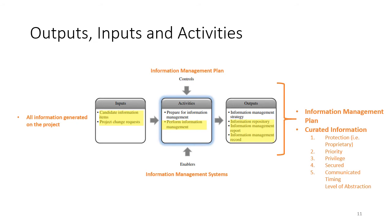The information management process takes all information generated in the project, processes it according to an information management plan using an information management system, and curates the information with the 3PSC properties to disseminate it appropriately across the project. The information management plan describes how information will be disseminated, while the information management system is the mechanism for distributing it — for example, a social media-style system like Slack for informal communication, or more formal, version-controlled systems for technical information.